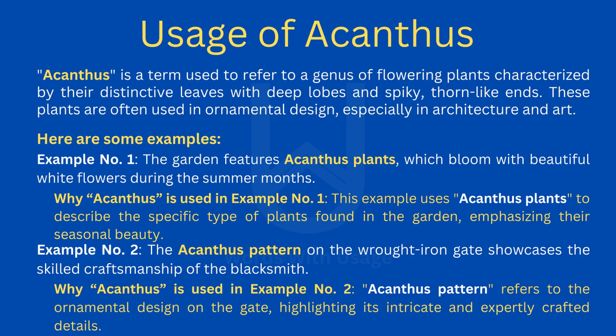Here are some examples. Example number one: the garden features acanthus plants, which bloom with beautiful white flowers during the summer months. This example uses acanthus plants to describe the specific type of plants found in the garden, emphasizing their seasonal beauty.